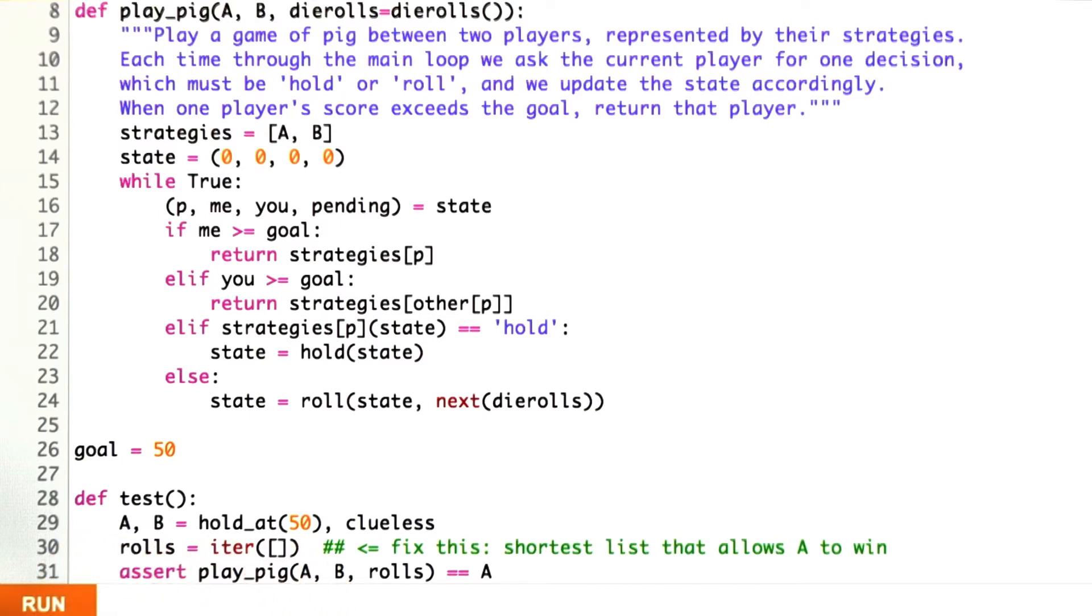So A and B are going to be my two contestants. A is hold at 50, which is equivalent to saying never hold until you win. B is the clueless function, the one that acts at random.